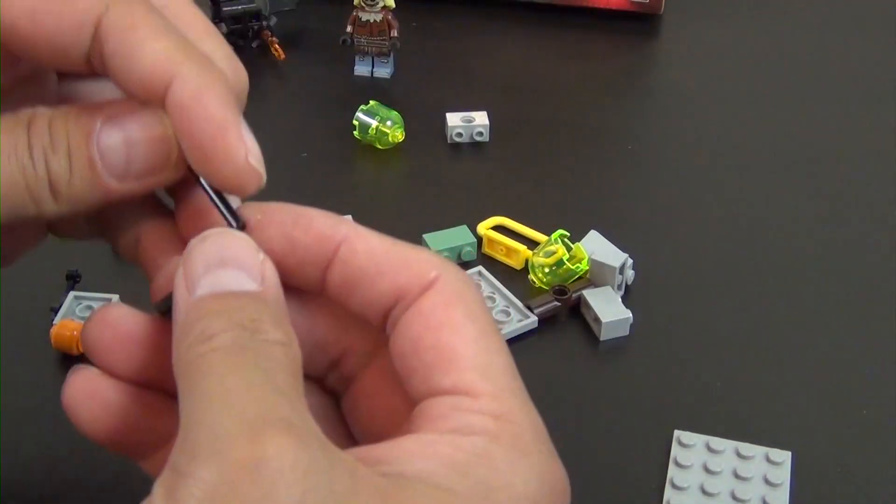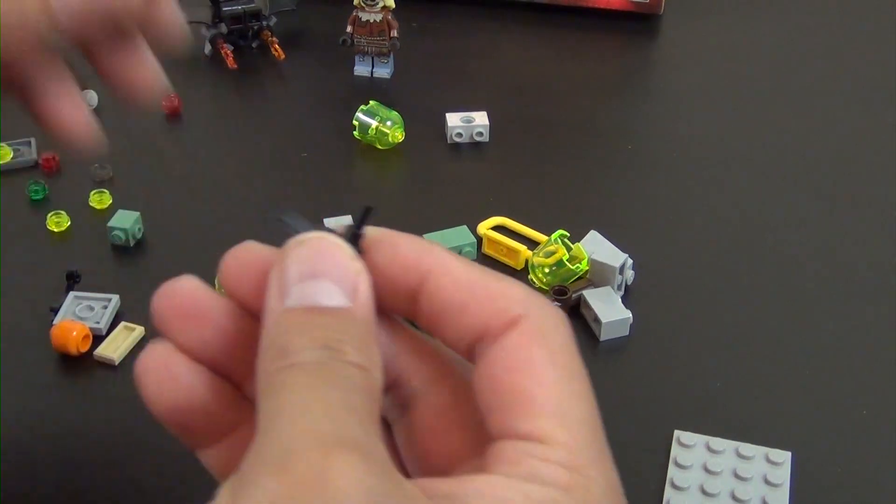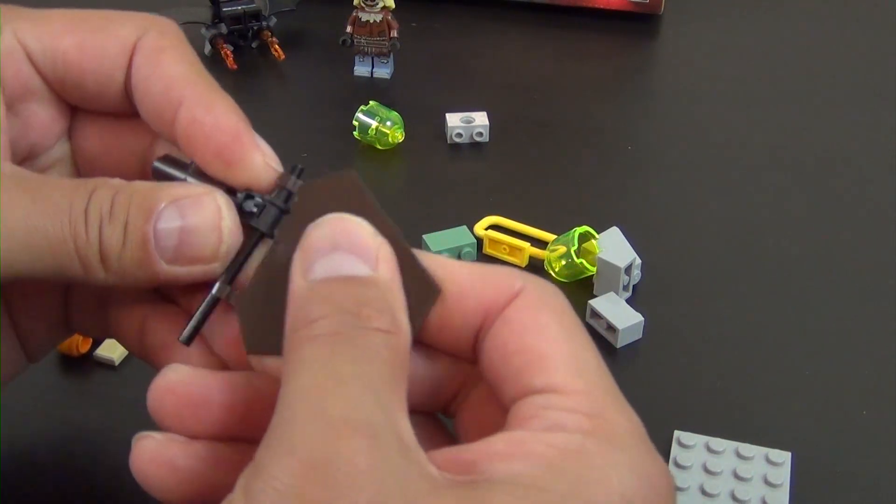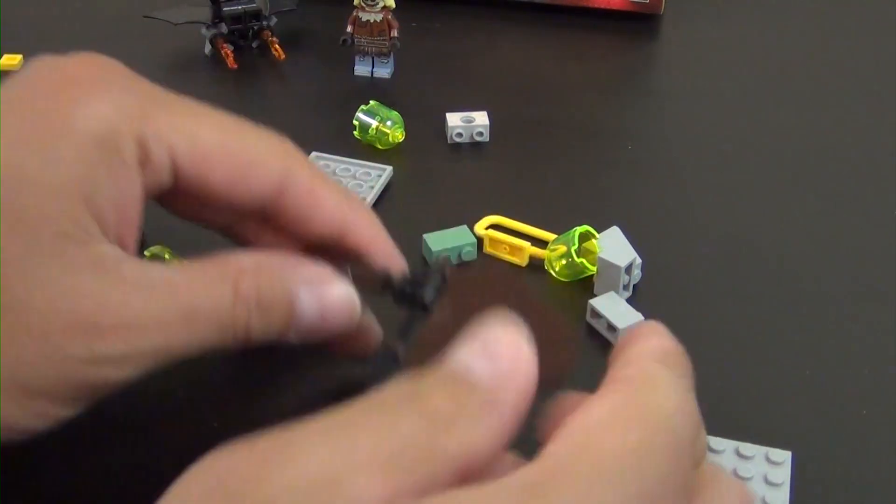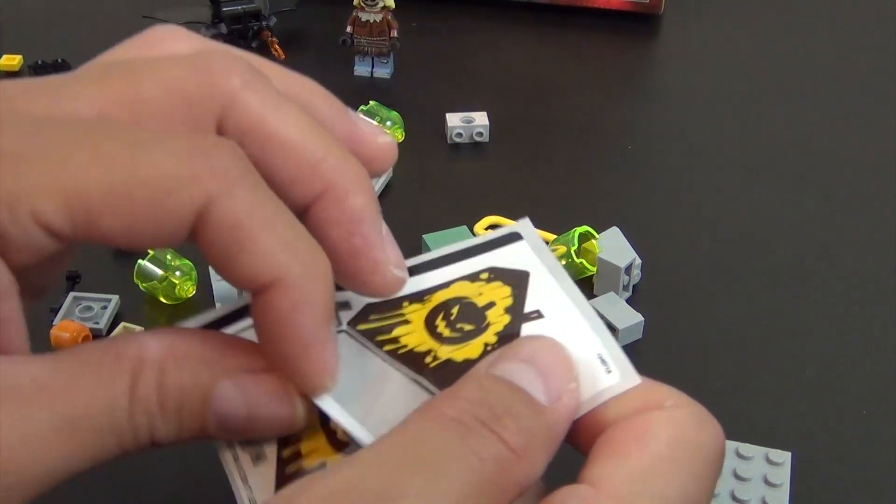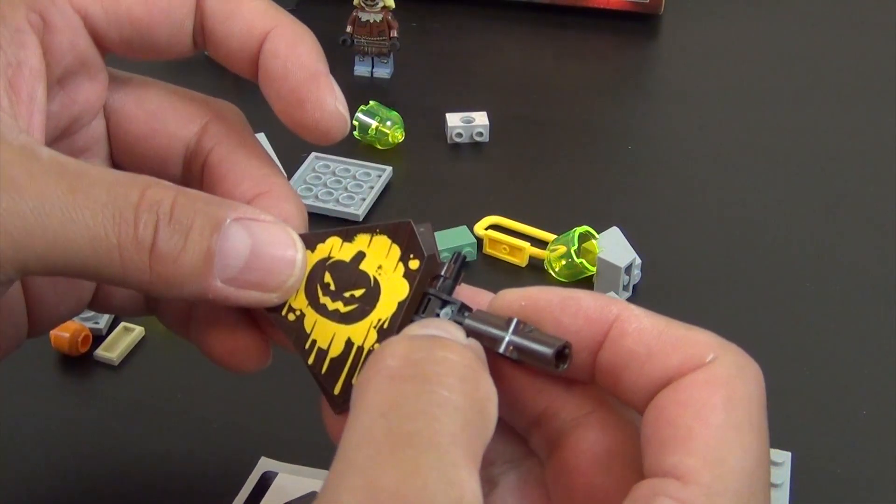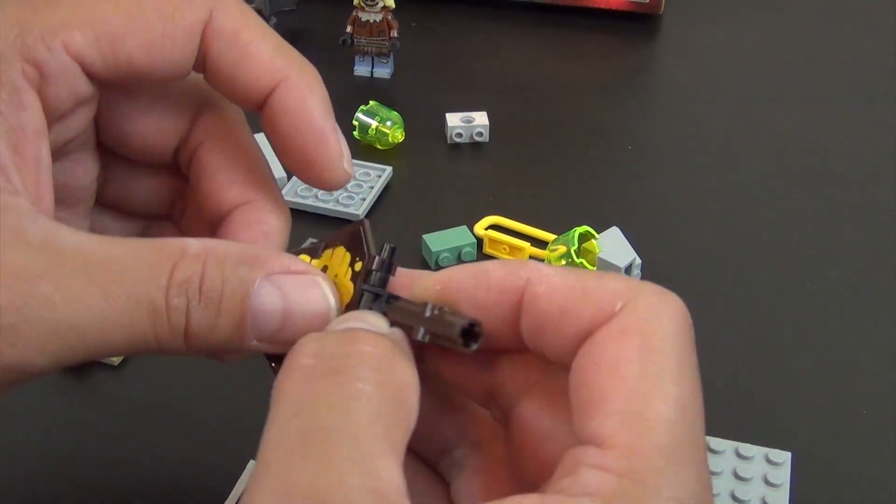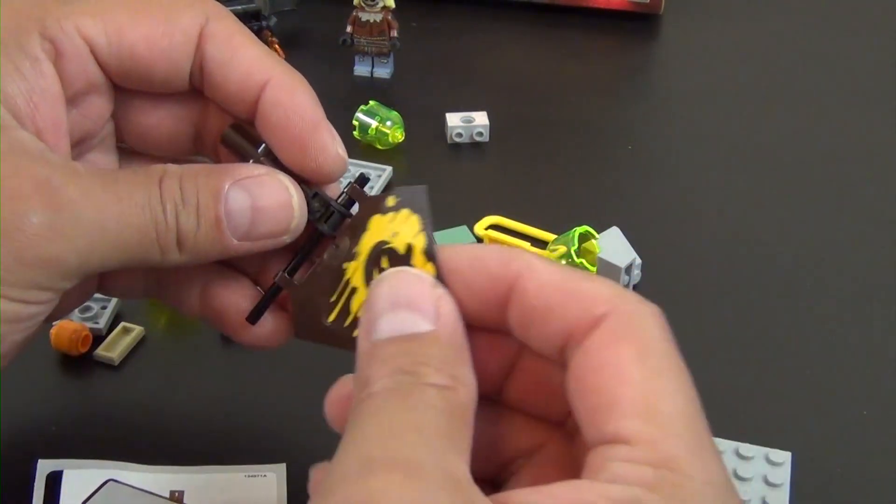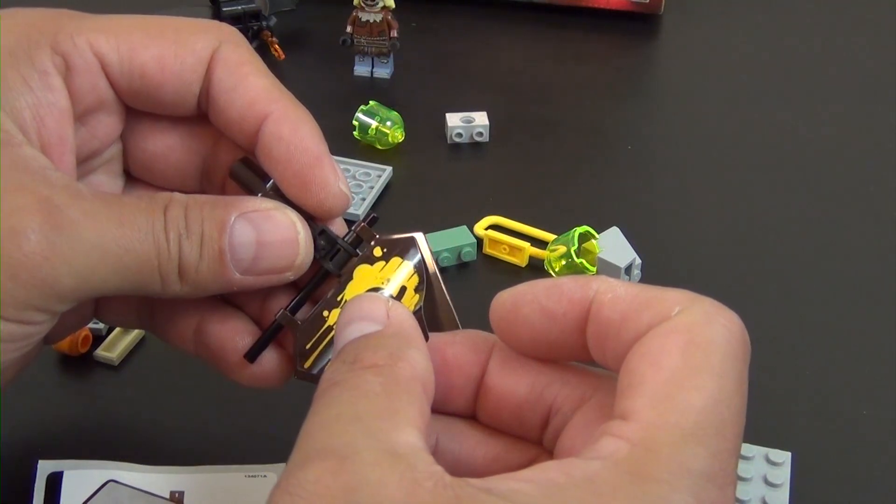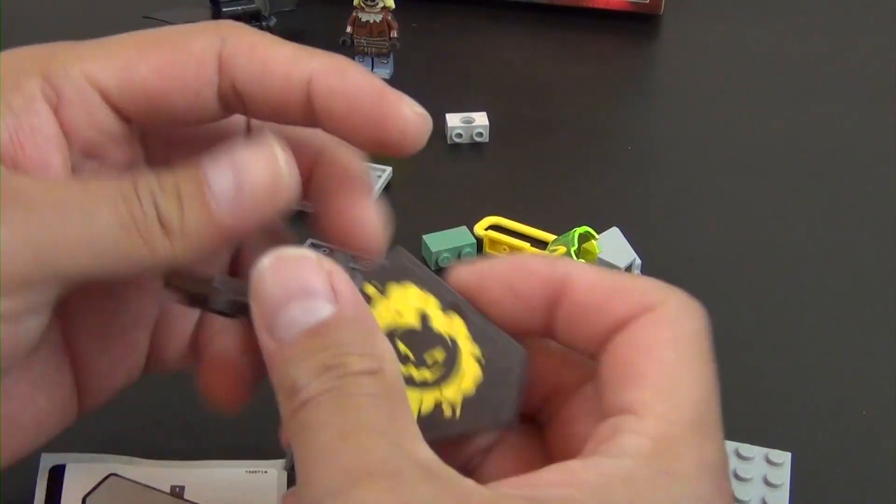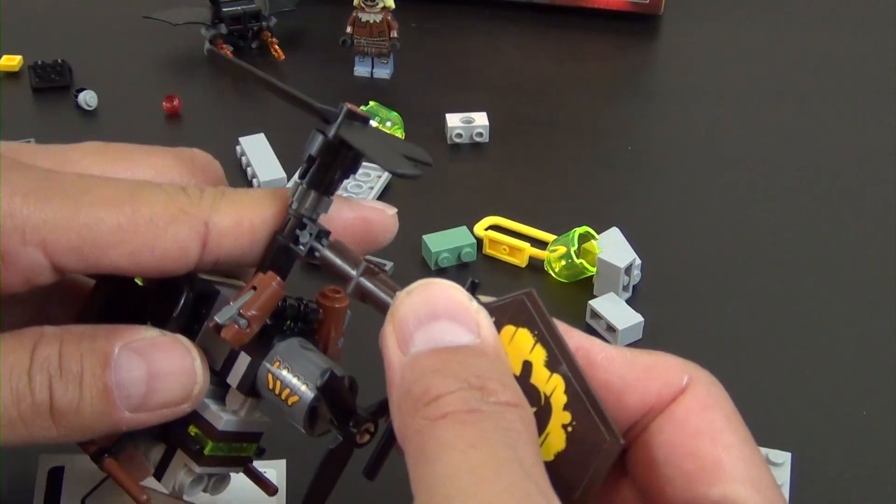All right, so next is the rear fin part there. We have this flag element. This will get a couple stickers. Carefully put this on because if you put it on crooked, it'll hang off the edges. So you have to make sure to line it up with all the sides before you push it down. So that looks good, and this will go right here.